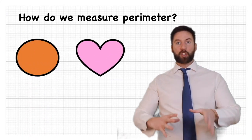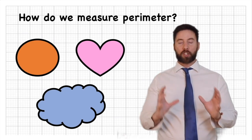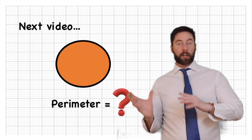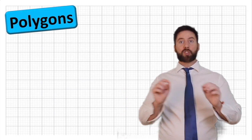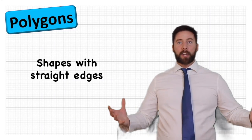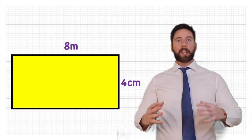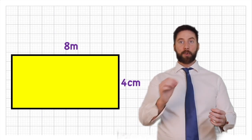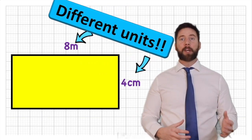So now we know what perimeter is, how do we measure it for geometric shapes? Some shapes like circles, hearts, or clouds are difficult to measure because they have curved lines. In our next video we'll look at circles, but for now we're focusing on polygons — shapes with straight lines. If we're given the measurements of each side, we simply add them up. Just be careful to make sure they're all in the same units.